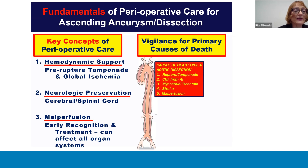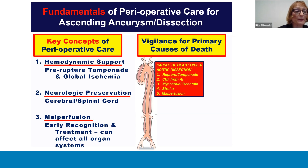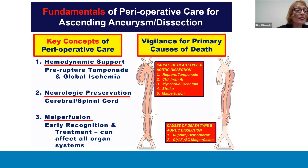The major fatal complications to be vigilant for and immediately identify in aortopathies and dissections involving the proximal aorta include rupture and tamponade, congestive heart failure from AI, myocardial ischemia, stroke, and malperfusion. The major fatal complications to identify for dissections involving the distal aorta include rupture and hemothorax, renal, GI, lower extremity, and spinal cord malperfusion.